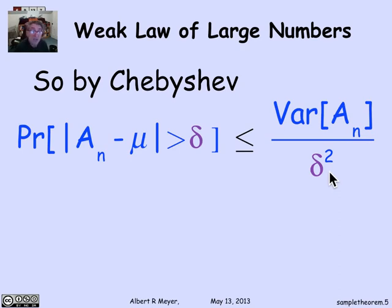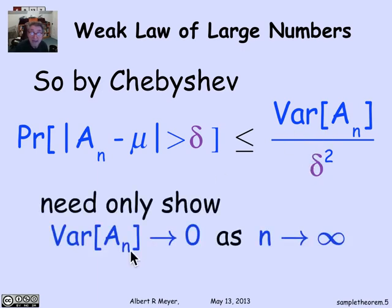So I will have proved the law of large numbers if I can prove that the limit as n approaches infinity of the variance goes to 0. Because that means that the right hand side will be going to 0 over delta squared, namely going to 0, which is what the law of large numbers says.